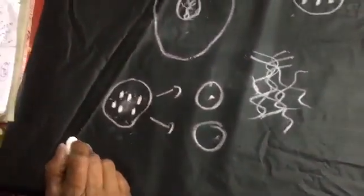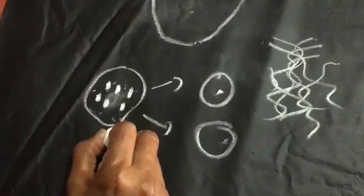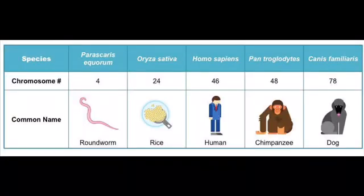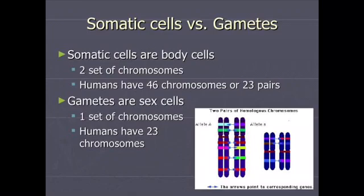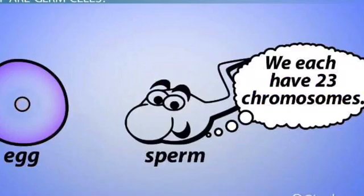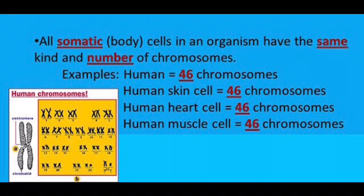At this stage of cell division, the chromosomes can be counted. Scientists counted them and realized the number of chromosomes is constant among members of the same species. For example, we human beings — homo sapiens — all have 46 chromosomes in all the cells of the body. These are the somatic cells, meaning all cells except the reproductive cells, which are the sperm cell and the egg cell.